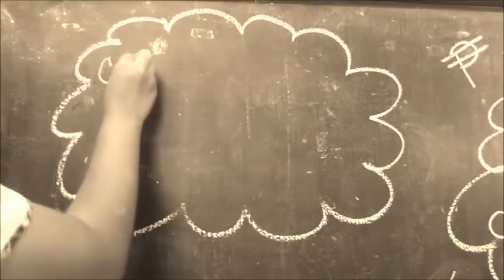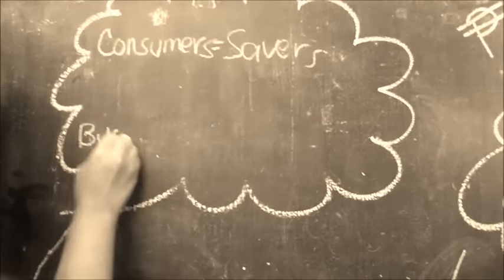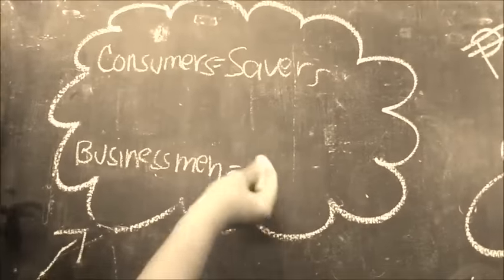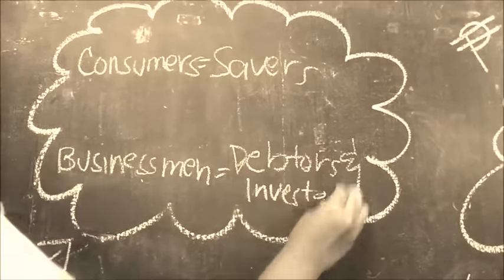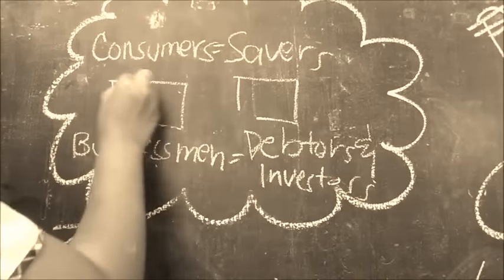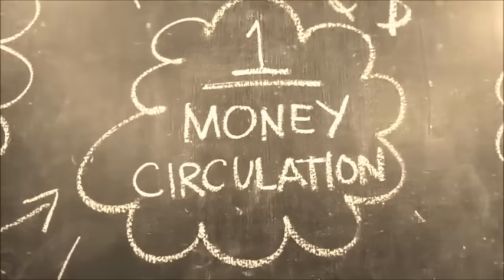When we save in banks, money circulates within the businessmen and the common people because businessmen build companies from the money they have loaned and the consumers spend their money to buy the products and services which the businessmen build. And that's what we call money circulation.